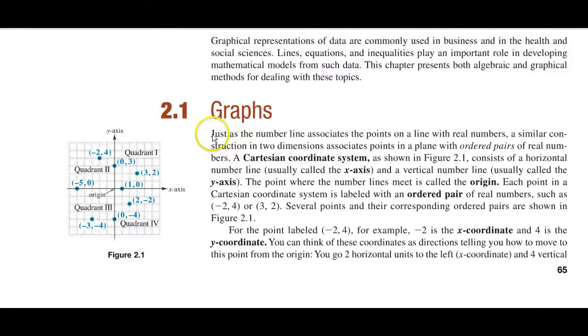When we think of a graph, remember we're thinking of two number lines: a horizontal number line, which is our x-axis, and a vertical number line, which is our y-axis. Units to the right here are positive, to the left are negative, above are positive, and below are negative.